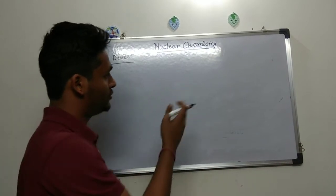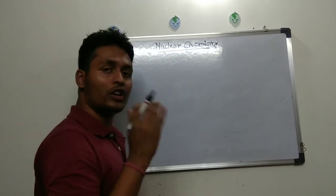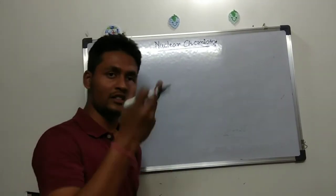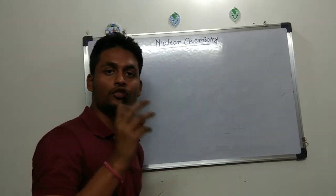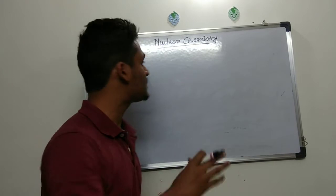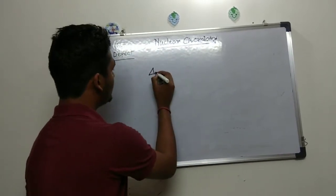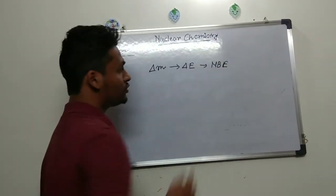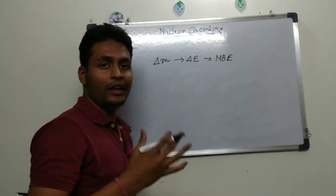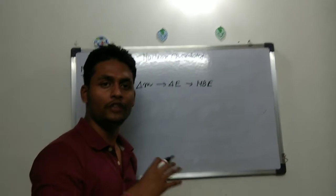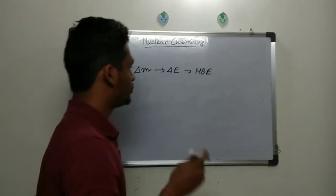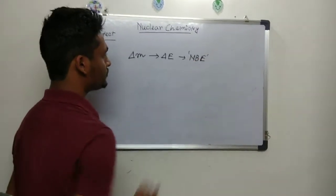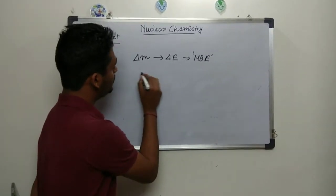The total energy obtained by multiplying the mass defect by 931 MeV is the nuclear binding energy. This is called nuclear binding energy because the mass defect produces energy responsible for the stability of the nucleus. The definition of nuclear binding energy is: the energy required to disintegrate a nucleus completely into all its constituent parts — all protons and neutrons.